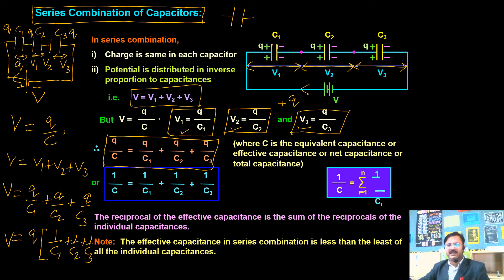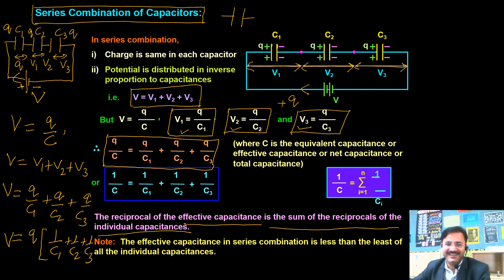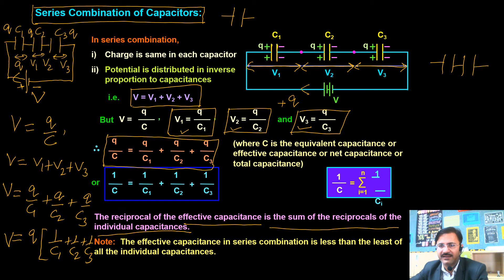If n capacitors are connected in series, the formula extends to 1/C = 1/C1 + 1/C2 + ... + 1/Cn. The reciprocal of the effective capacitance is the sum of reciprocals of the individual capacitances. In a series combination, the equivalent capacitance is minimum and less than the least individual capacitance. For two capacitors in series: C = C1C2/(C1 + C2).